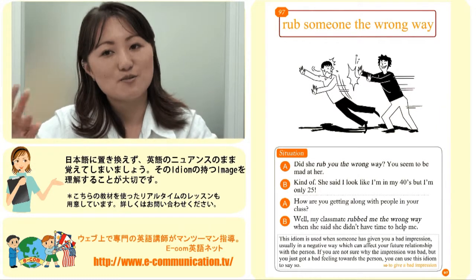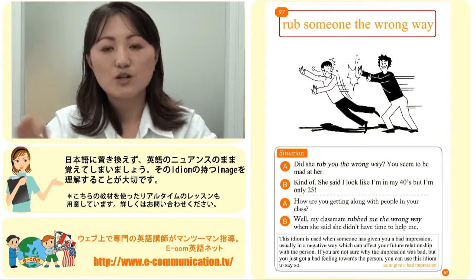What does it mean to rub someone the wrong way? We know it's negative — it's not good. It actually means to give a bad impression. So for example, if my friend tells me, 'Hey Patty, are you in your 40s?' — that's a bad impression. She is rubbing me the wrong way. So maybe next time when someone tells you something that offends you, hurts you, or gives you a bad impression about the person, you can say: she rubbed me the wrong way.